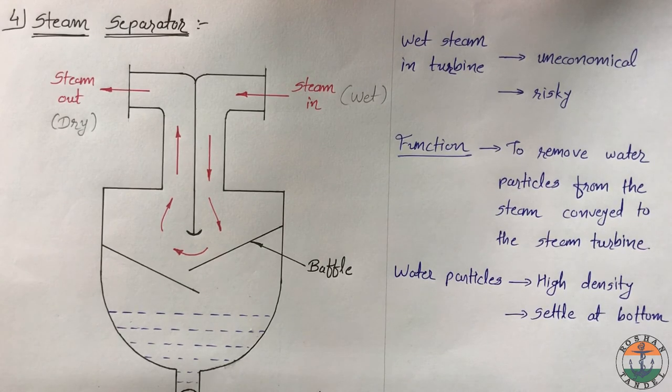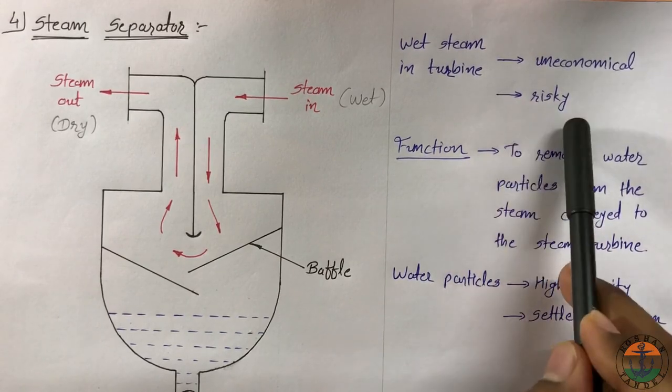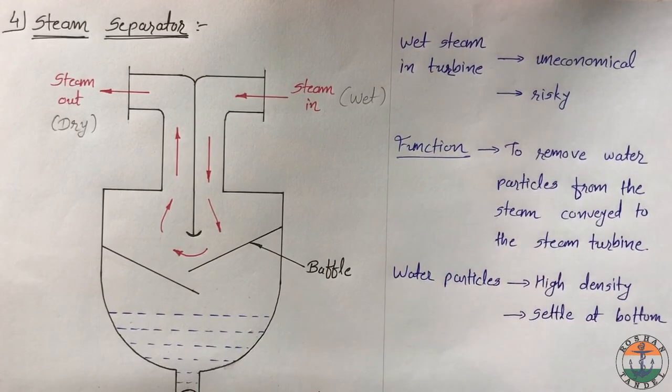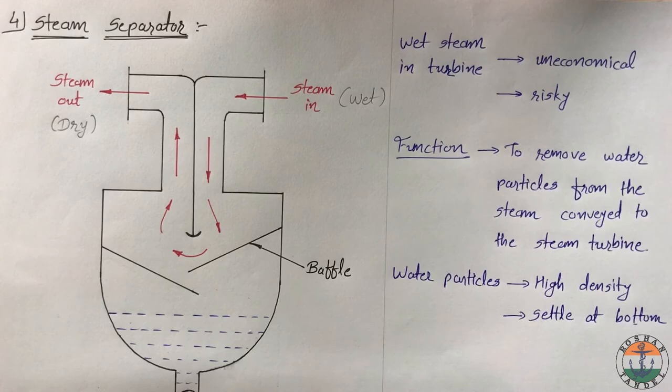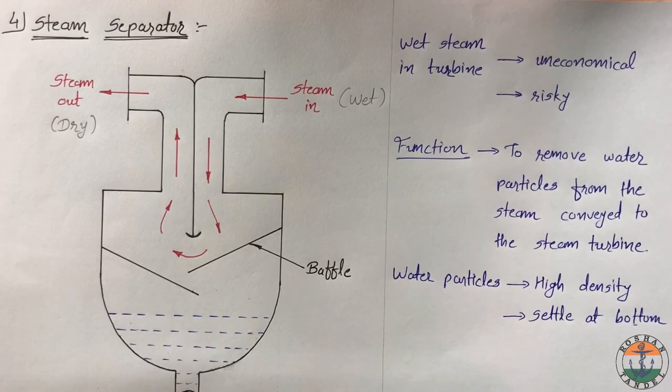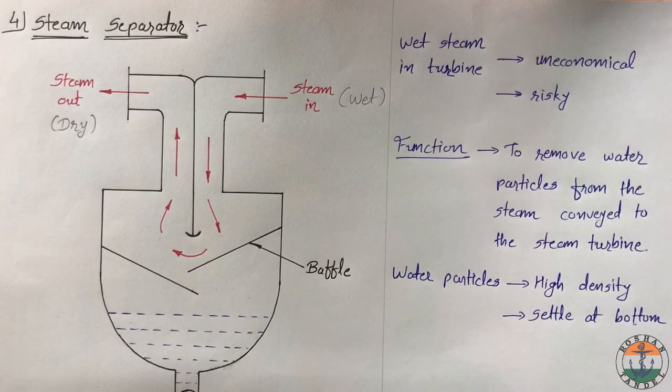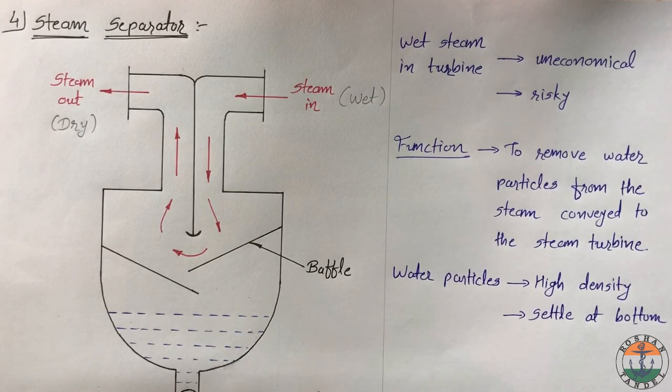Wet steam in the turbine is uneconomical and involves many risks. The function of steam separator is to remove these water particles from the steam going to the steam turbine.